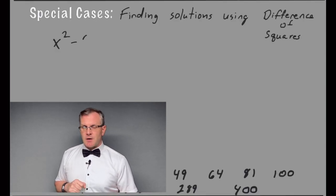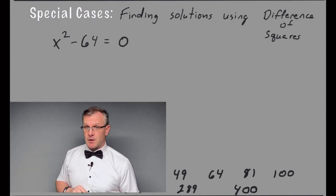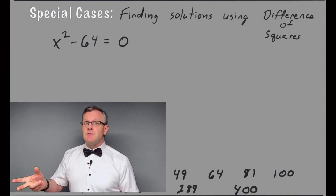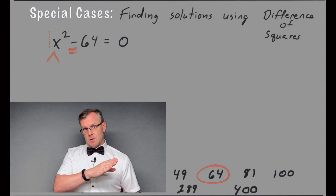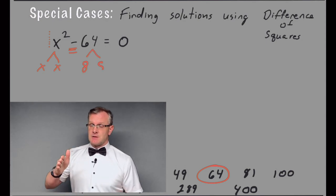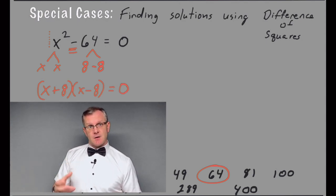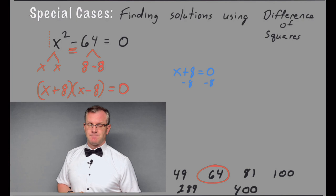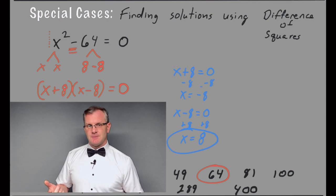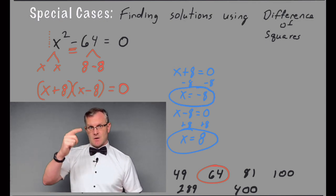X squared minus 64 equals zero. Finding the solutions. X squared is a perfect square with a coefficient of one. One's a perfect square. My C term, negative 64. 64 is a perfect square. Separate it by subtraction. X times X for our first term. 64 breaks up into eight times negative eight. One positive, one negative. So the factoring on this looks like X plus eight, X minus eight. Set each of those pieces equal to zero and solve. We end up with zeros at eight and negative eight. Our zeros are opposites. Our C term is negative.